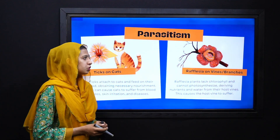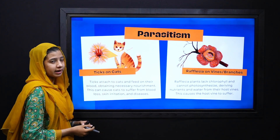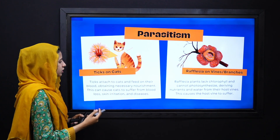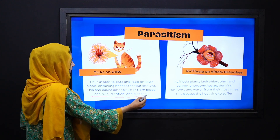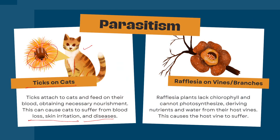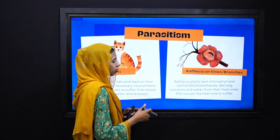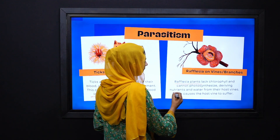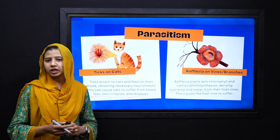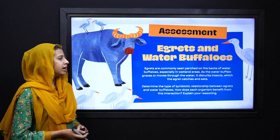In parasitism, the first partner benefits while the second is harmed. For example, ticks on cats suck blood and cause skin irritation, blood loss, or various diseases. Similarly, Rafflesia is a plant that has no chlorophyll and cannot photosynthesize, so it takes water and nutrients from its host vine, causing the vine to suffer. This type of relation is called parasitism.